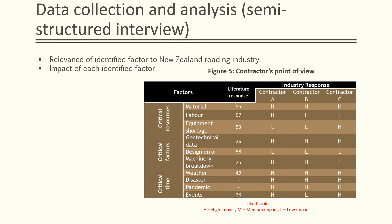Based on the systematic literature review, semi-structured interviews were organised with three local field experts. The contractors interviewed during this study had a minimum of 10 to 15 years of work experience in the New Zealand road construction industry. Figure 5 represents the contractors' point of view on the data identified during the systematic literature review. These factors were further divided into three major categories based on their characteristics. Material, equipment, and labour are identified as critical resources, whereas design error, breakdown, and geotechnical data are identified as critical factors. Weather, pandemic, natural disaster, and events fall under critical time characteristics. The semi-structured interviews helped us understand the elements of these factors specific to the New Zealand roading industry.